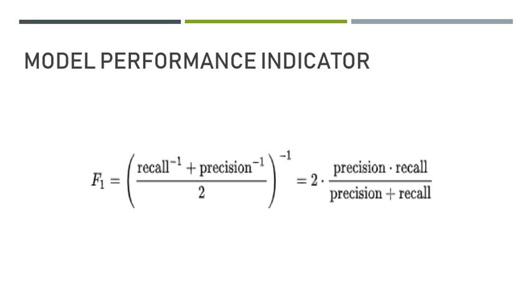Next, for the model performance indicator, I took the F1 score. This is the common performance indicator to indicate our model performance. The formula is 2 multiplied by precision, multiplied by recall, and divided by precision plus recall.